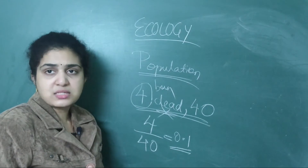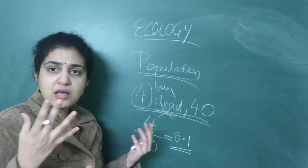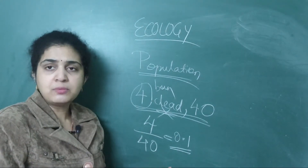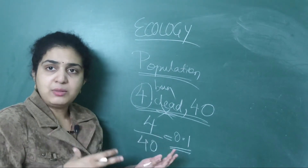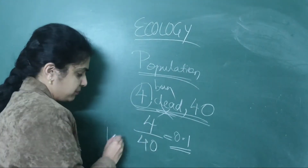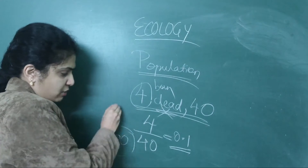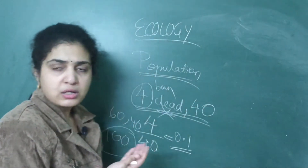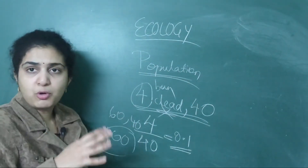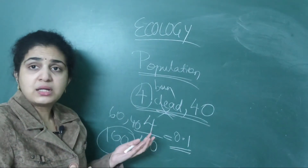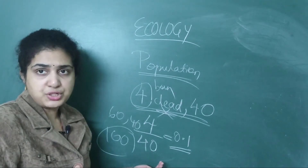Then we covered sex ratio. Sex ratio means how many males and how many females are in the total population. Suppose the total population is 100: 60 were females and 40 were males. Sex ratio is calculated as how many are female and how many are male in the total population. So that is about birth rate, death rate, and sex ratio.